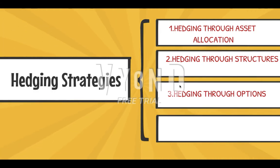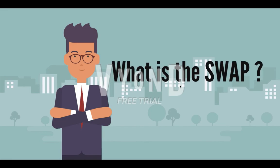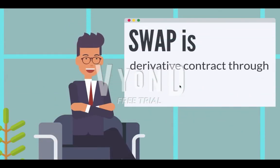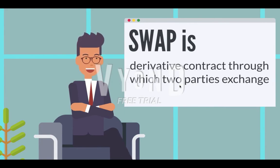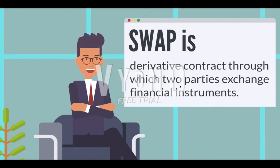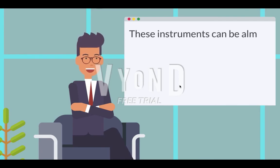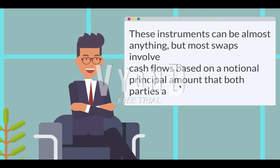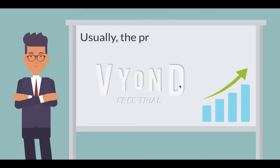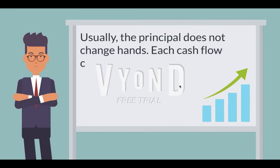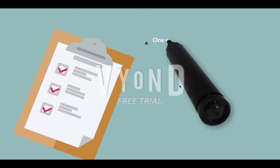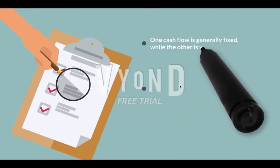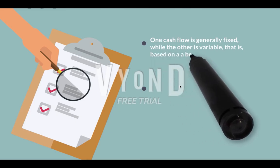A swap is a derivative contract through which two parties exchange financial instruments. These instruments can be almost anything, but most swaps involve cash flows based on a notional principal amount that both parties agree to. Usually the principal does not change hands. Each cash flow comprises one leg of the swap.